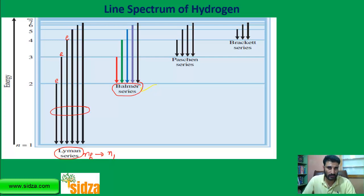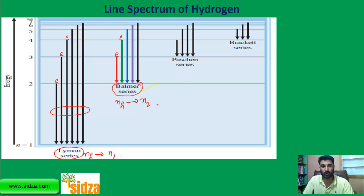The Balmer series is when an electron makes a jump from any higher shell to the second energy level. So from third to second, fourth to second, fifth to second — from any higher shell to N2. All the different kinds of radiation emitted in this case belong to the Balmer series.